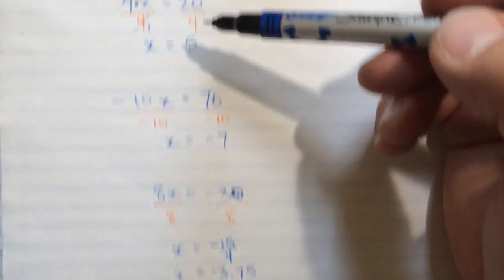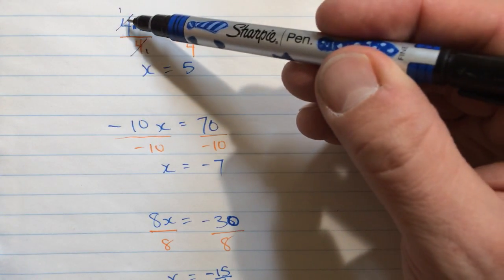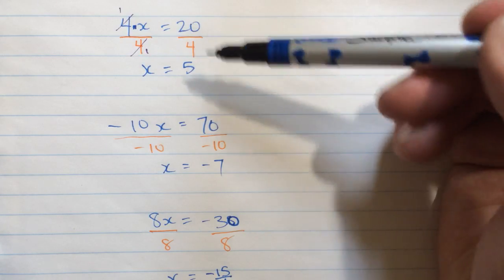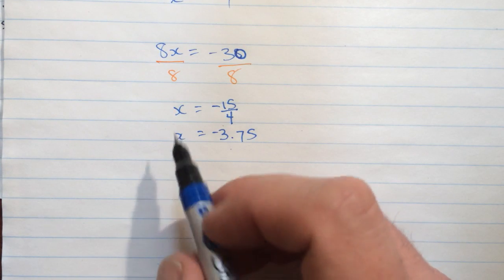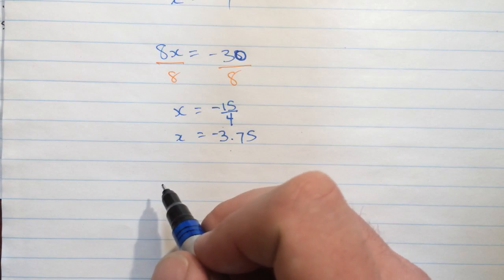So all of these, they all have the same situation. A number times x equals another number. And you can just divide by that number. What if that number out front, though, were a decimal or a fraction?